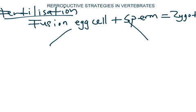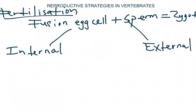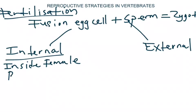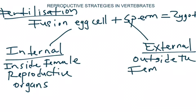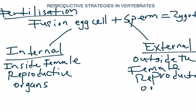There are two types of fertilization: internal fertilization and external fertilization. Internal fertilization takes place inside the female reproductive organs, and external fertilization takes place outside the female reproductive organs.